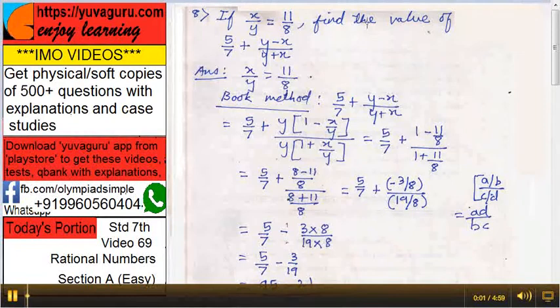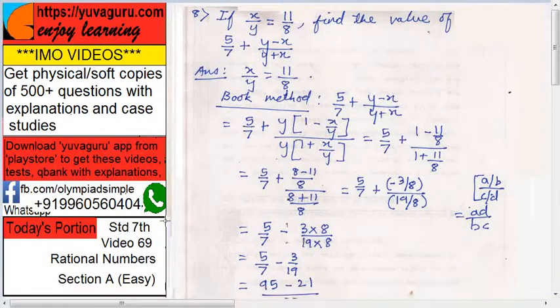Hi friends, welcome to IMO videos, Standard 7, Video No. 69, Rational Numbers, Section A, Easy. Let's start. If x upon y equals 11 upon 8, find the value of 5 upon 7 plus y minus x upon y plus x. Sorry, y minus x upon y plus x.